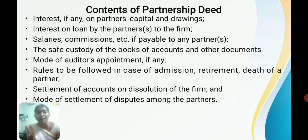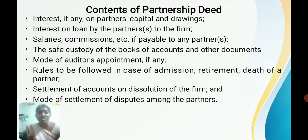Next, interest on loan — the loan amount is given by the partner to the firm, so it is income for the partner and an expense for the firm. The rate of interest on loan is mentioned in the deed. Next, salaries and commission — these are incomes of the partner and expenses of the firm. How much salary and commission are paid to the partners is mentioned in the deed. Next, safe custody of books of accounts and other documents — how the major accounting books are kept safely is mentioned. Then, the mode of auditing — whether accounts are audited once every three months, six months, or yearly — is specified in the deed.